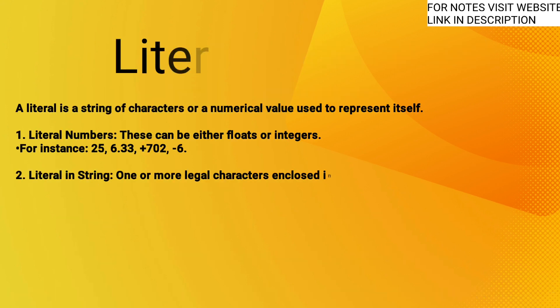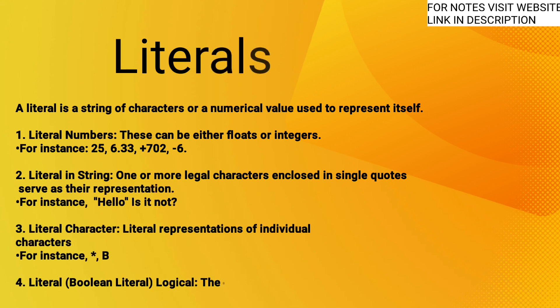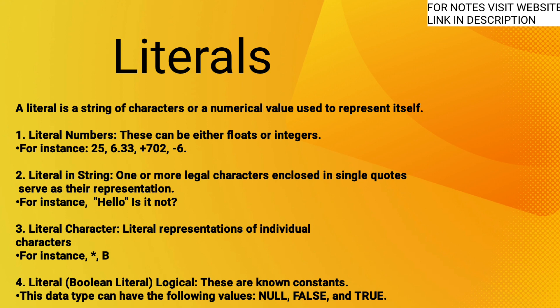A literal is a string of characters or a numerical value used to represent itself. One, literal numbers — these can be either floats or integers, for instance: 25, 6.33, +702, -6. Two, literal strings — one or more legal characters enclosed in single quotes, for instance: 'hello', 'is it not'. Three, literal character — representations of individual characters. Four, literal boolean — logical known constants; this data type can have the values: null, false, and true.